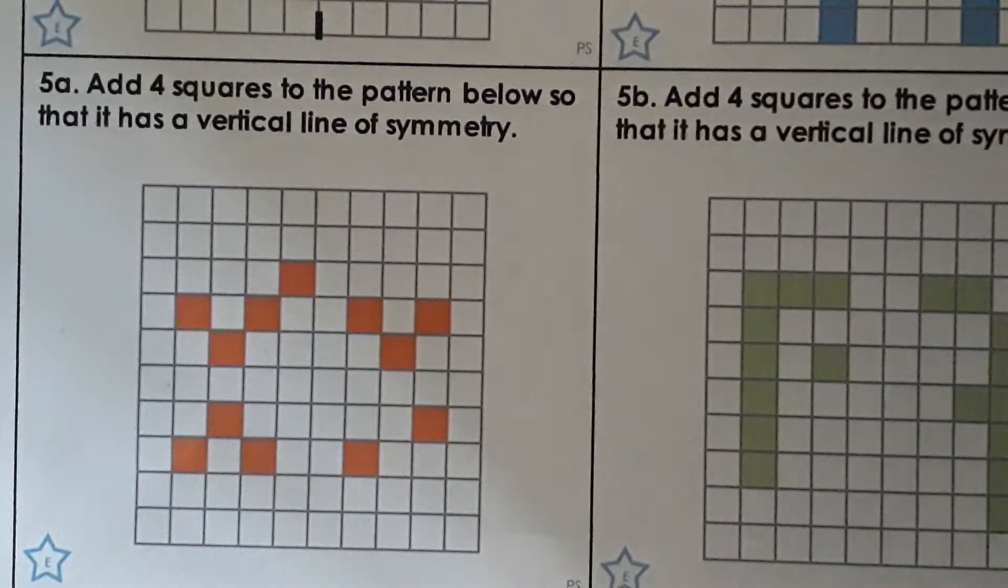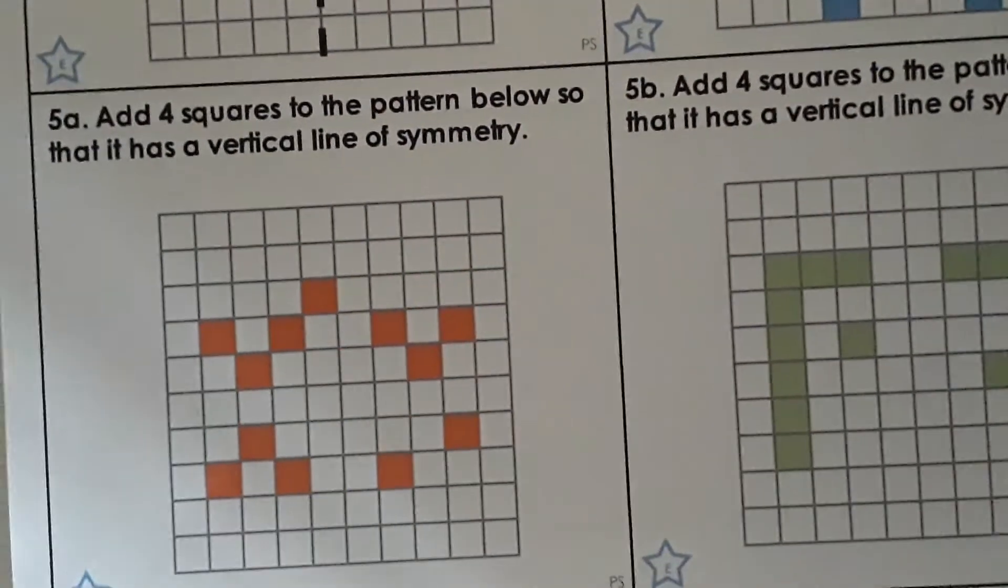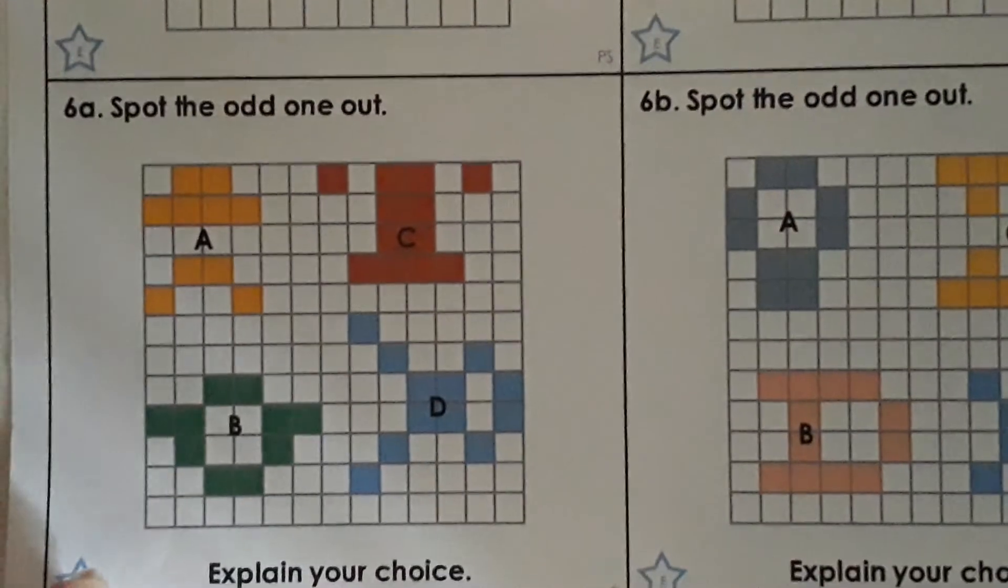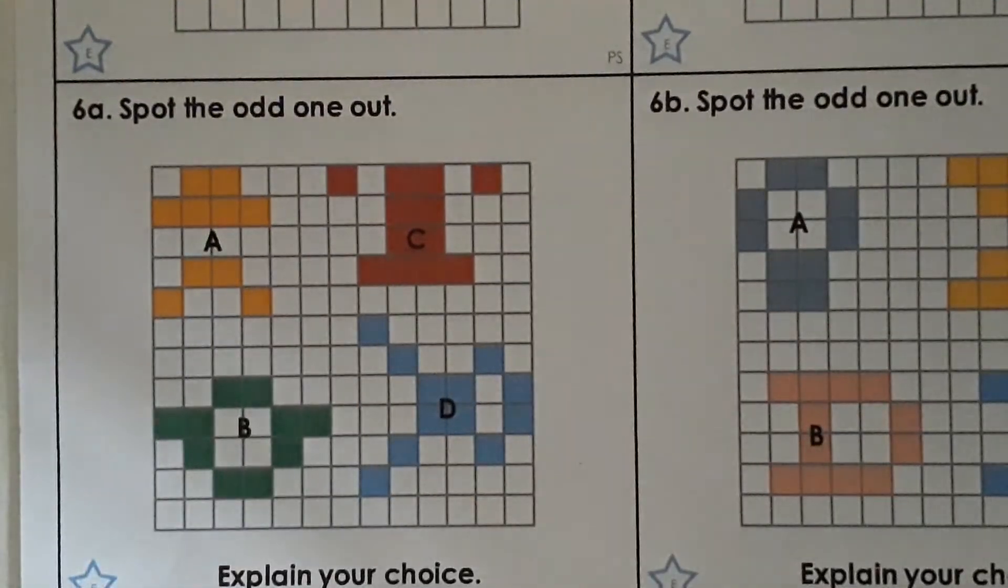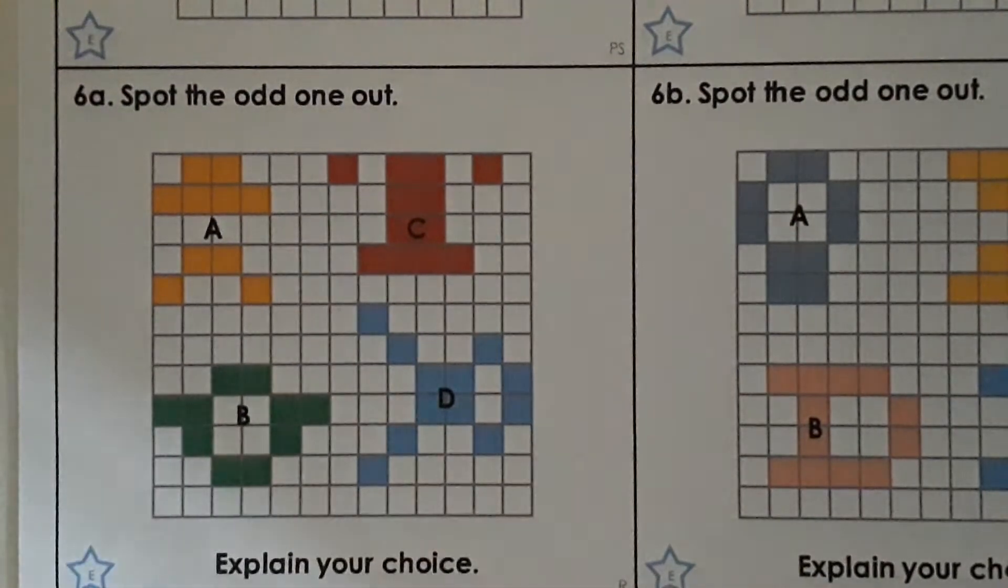Okay so we need to add four squares to complete the pattern and then that last one again is about spotting the odd one out and explaining your choice.